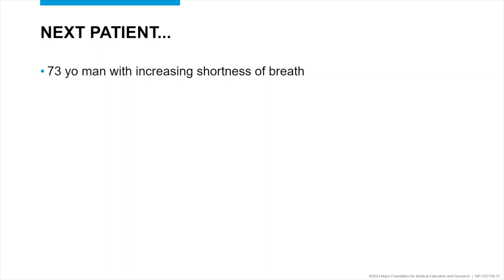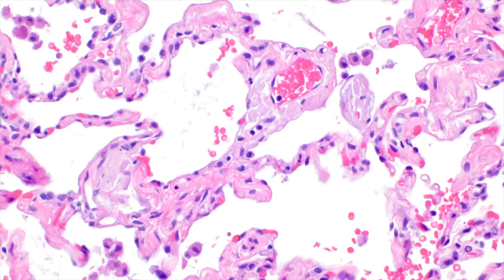Next patient: 73-year-old man with increasing shortness of breath. This is his biopsy — this is lung. These empty spaces are where air would be, and these are the thin delicate alveolar septa where air exchange happens. This is where the magic happens. There's something going on here — this is not quite as thin and delicate as you'd expect. There's a single red blood cell in a nice little capillary, but there's some material interposing itself in between that shouldn't be there.